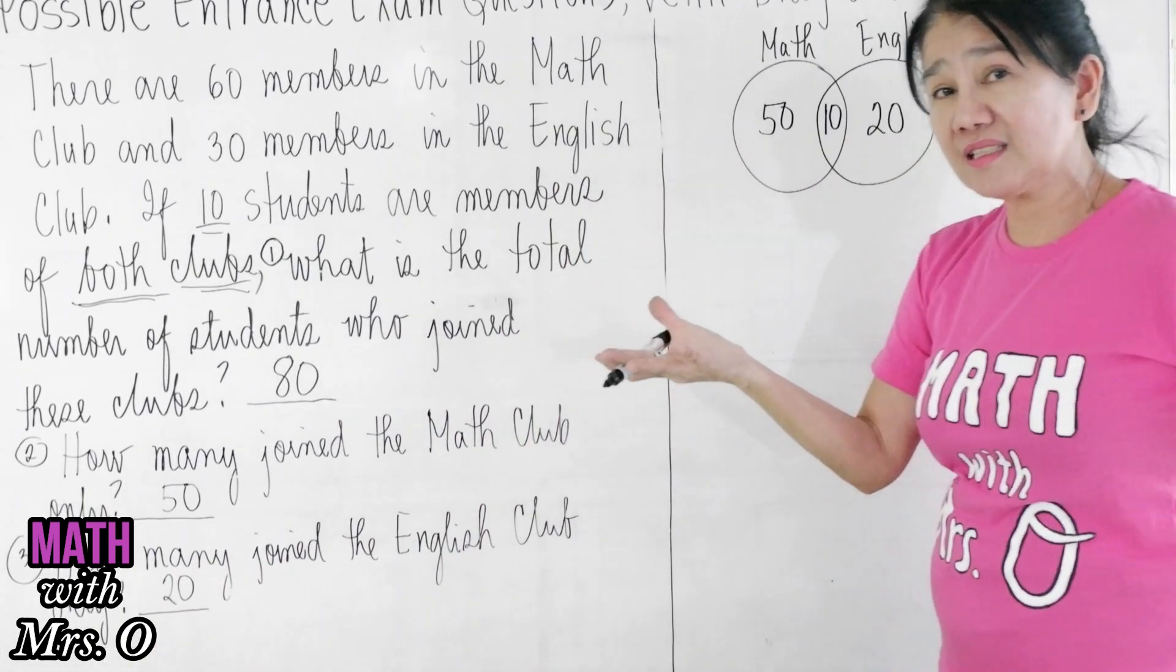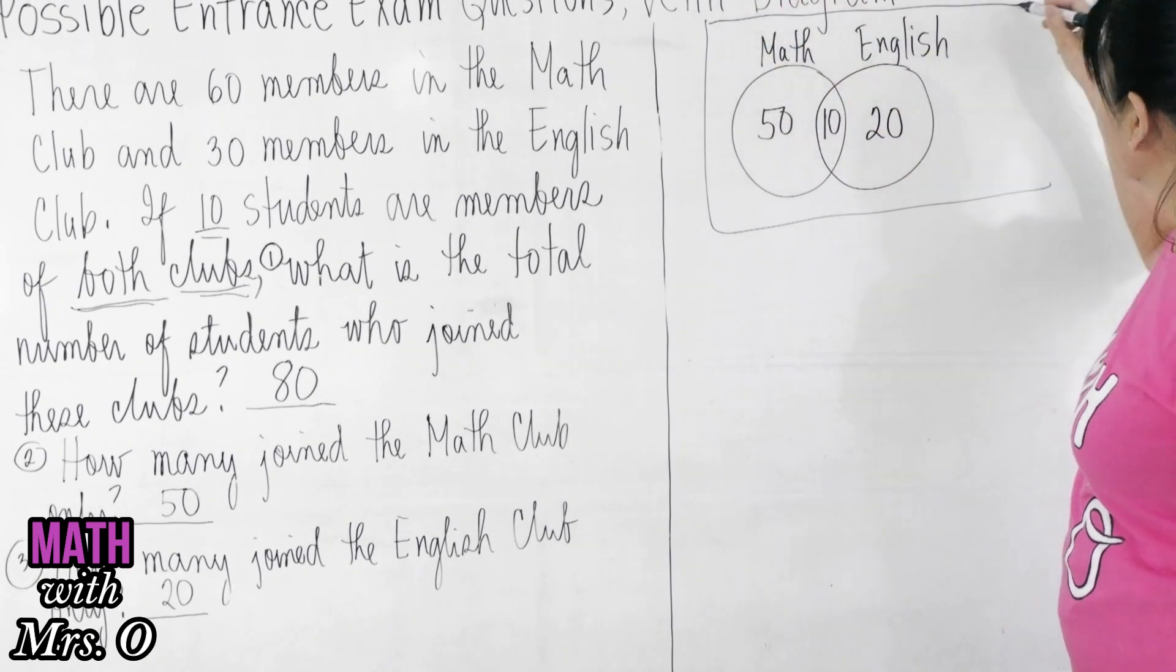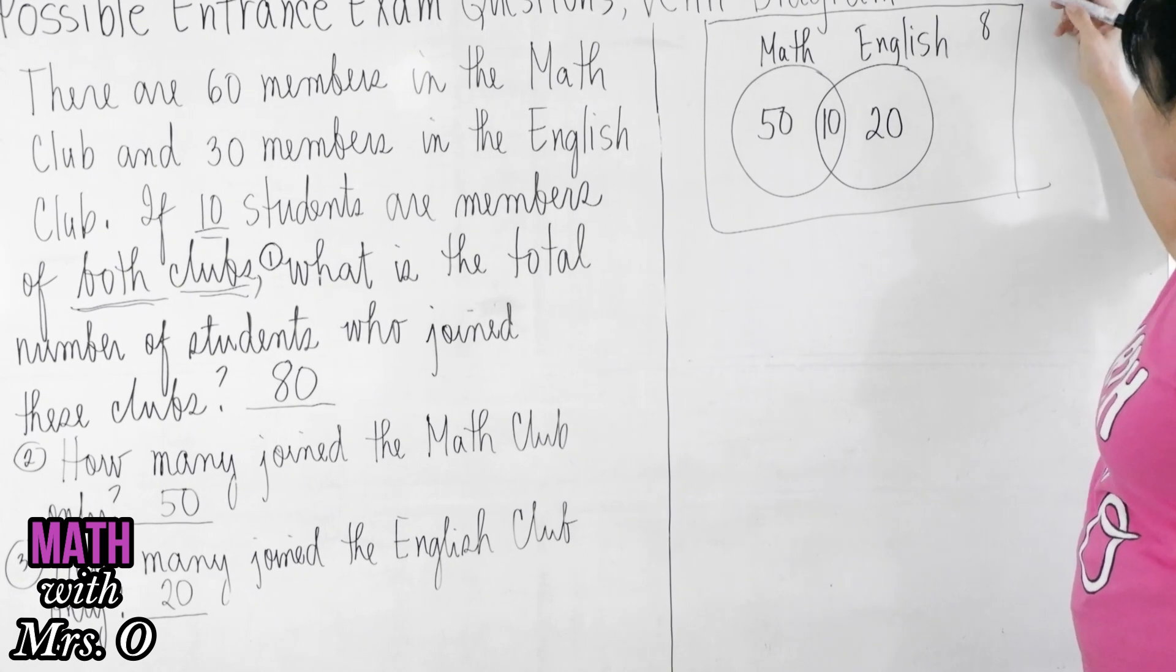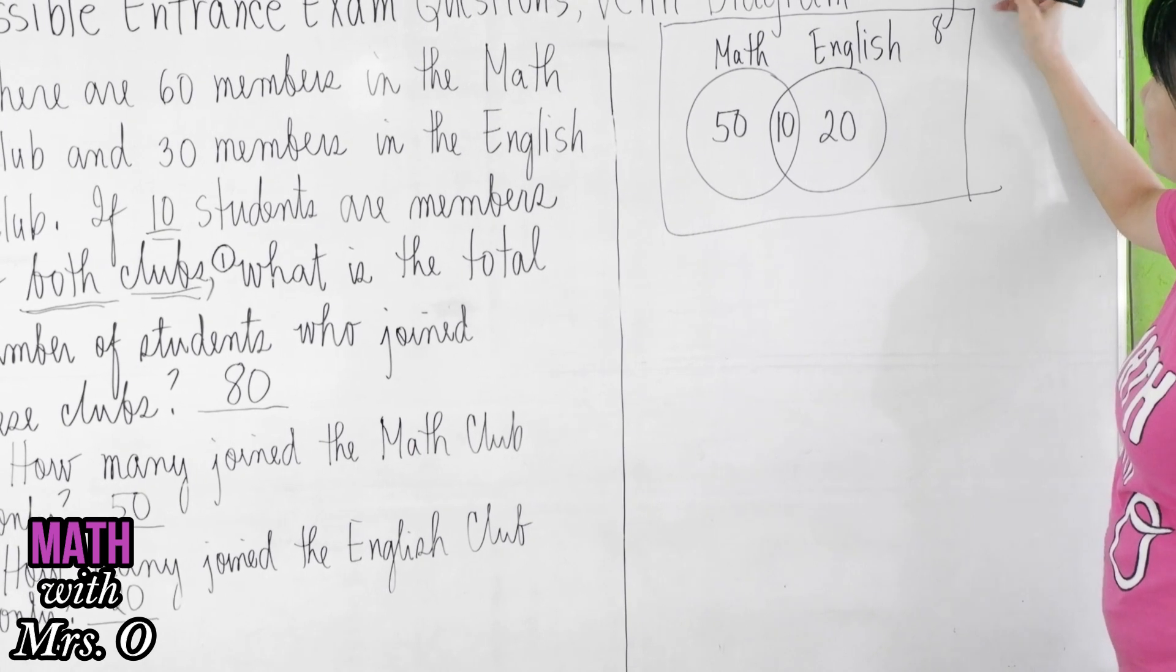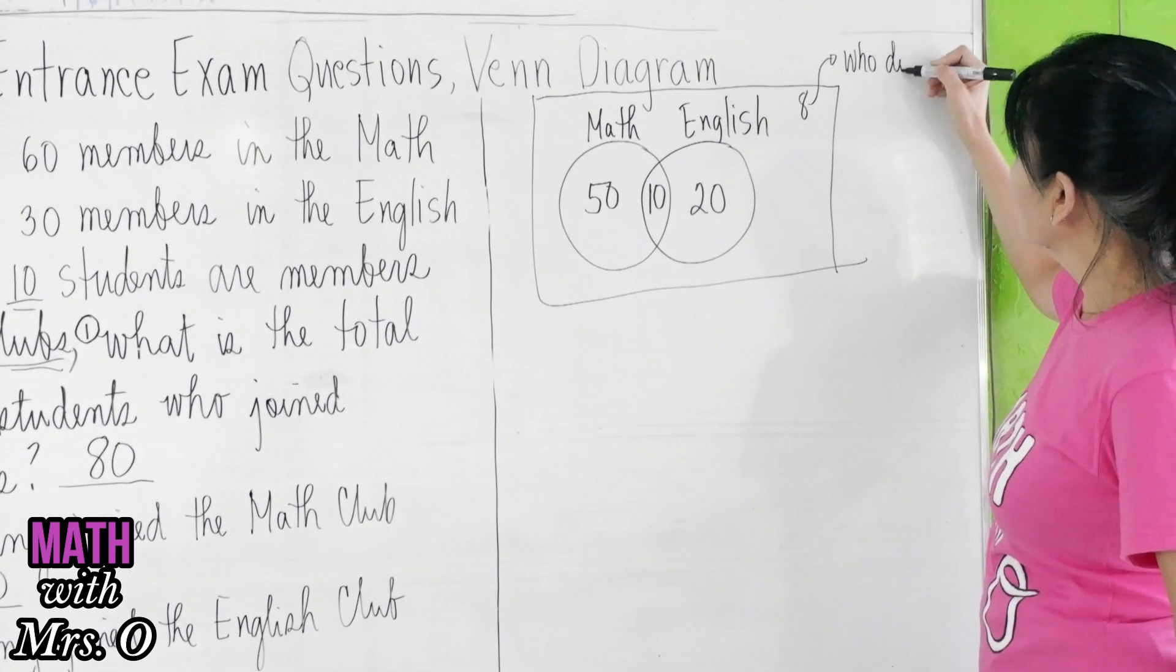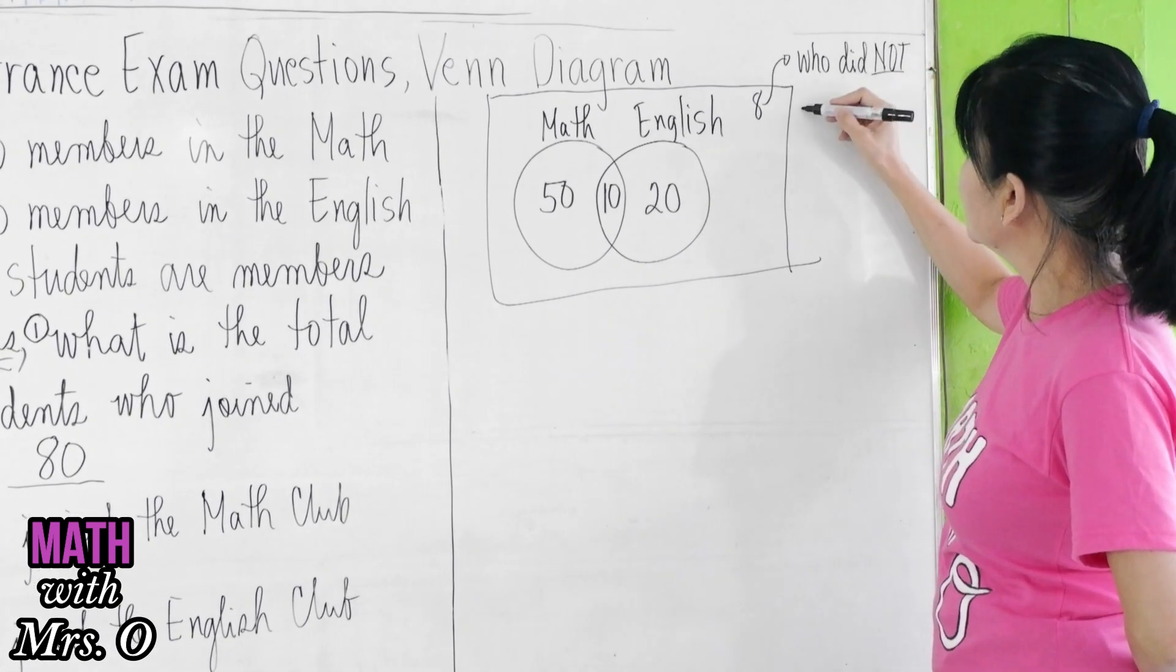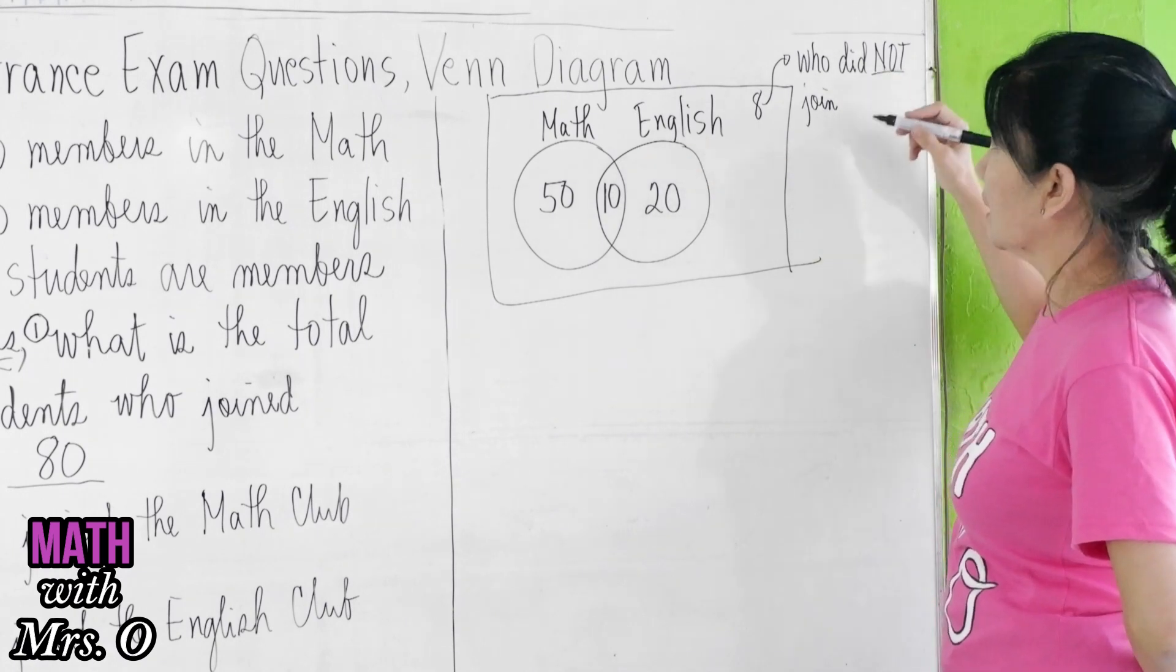Now, in case that your problem is more difficult, and let's say there is a number here, let's say eight, remember that these are the number of students who did not join any of the two clubs.